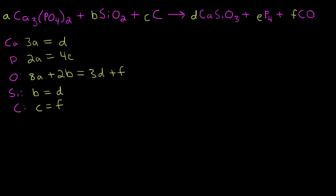Okay, so we have our equations. Now let's see if we can solve them. Start by letting A equal one. So then we can use the calcium equation to solve for D. So we have D equals 3A. If A is one, then D equals three. Now we can use the silicon equation to solve for B. So we have B is equal to D, which D is equal to three. So B is equal to three.